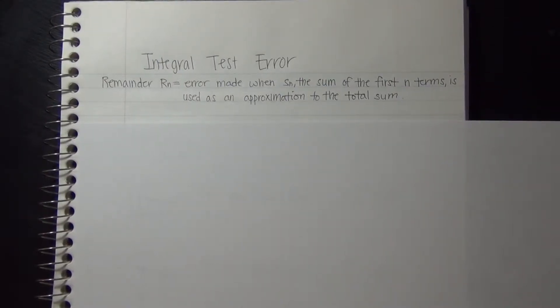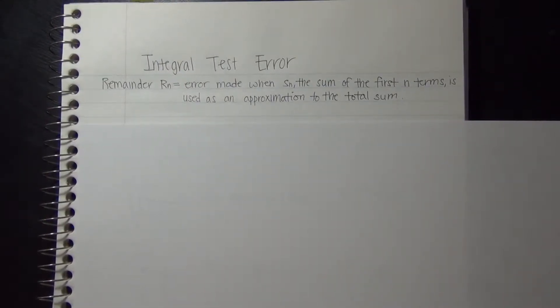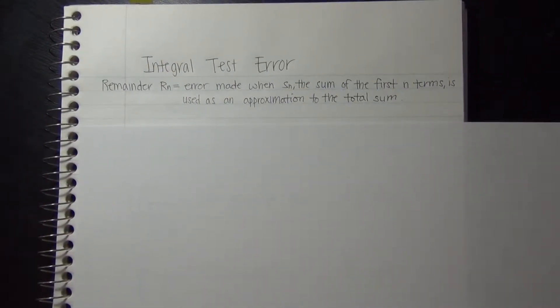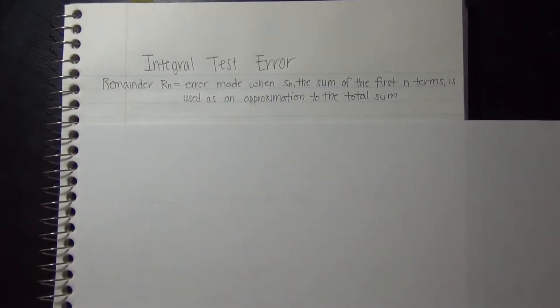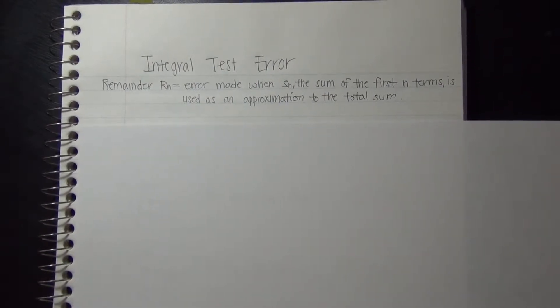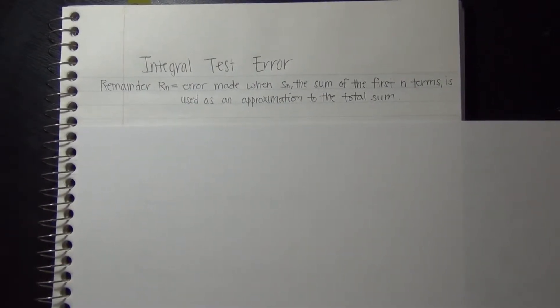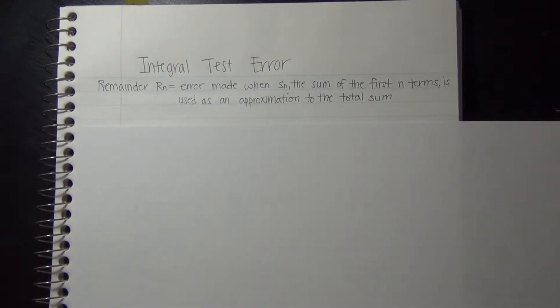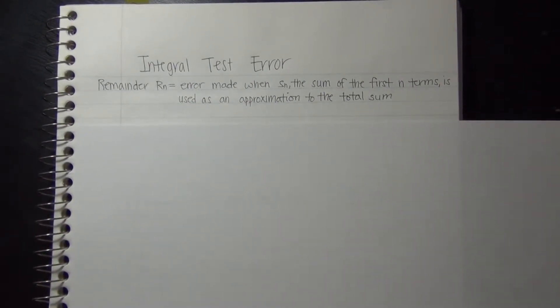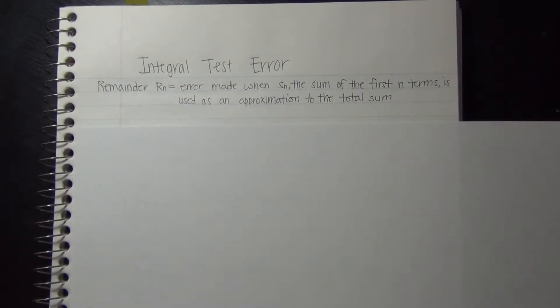Hi, I'm Nyanji and my project is on the integral test error. We'll first see the definition of the remainder Rn. It is the error made when Sn, the sum of the first n terms, is used as an approximation to the total sum.